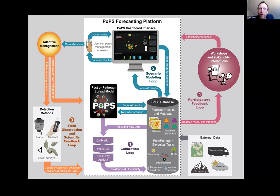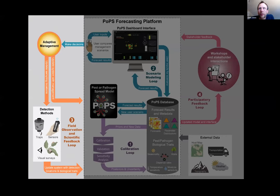The first is the calibration loop, where the model improves as we integrate new data. The second is the scenario modeling loop, and the fourth is the participatory feedback loop. Those two work together to help us better understand the needs of decision makers and stakeholders using model outputs and our decision support system. We're currently working with multiple states to help improve these models, outputs, and decision support systems. The third loop is the field observation and scientific feedback loop, where new data on species location is collected and new field studies are performed to improve our understanding of spotted lanternfly biology and update the model.